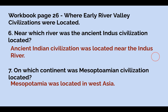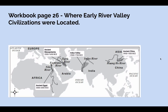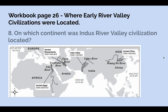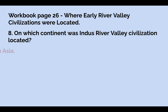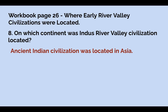Number eight: on which continent was the Indus River Valley civilization located? Ancient Indian civilization was located in Asia. India is part of Asia.